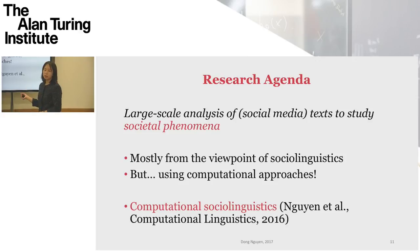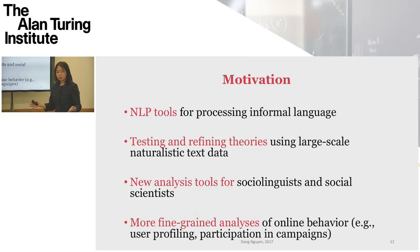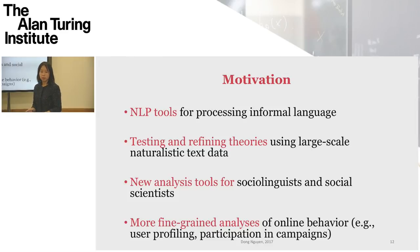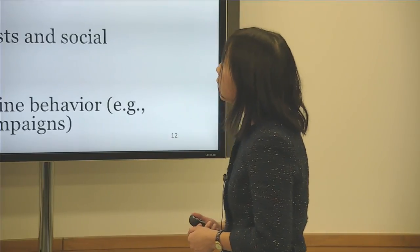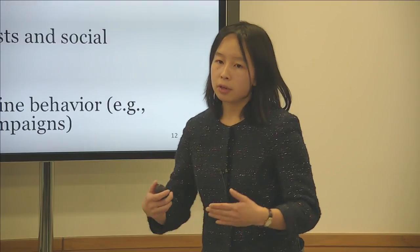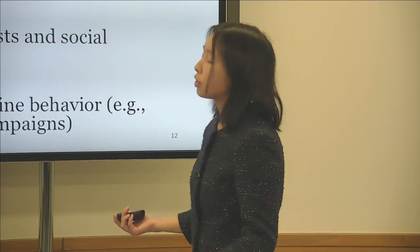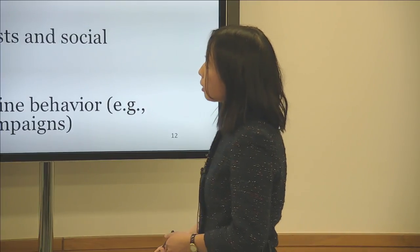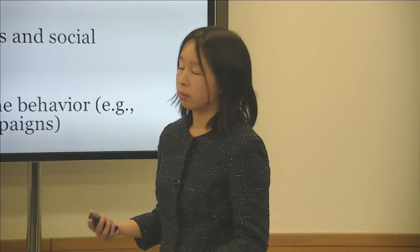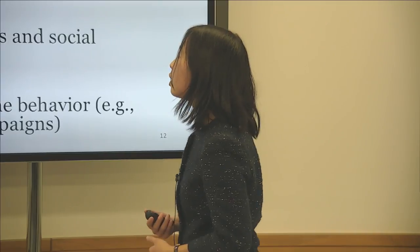So why is this research interesting? First of all, it can help improve the natural language processing tools that we have. For example, if you're analyzing language in social media, you would want to analyze all messages that are relevant and not exclude certain messages from certain social groups — from younger people, older people, or people writing a dialect. So you want your tools to be robust against language variation. It's also an opportunity to test and refine theories proposed in social linguistics using large-scale naturalistic text data, to develop new analysis tools, and it also has practical applications such as supporting user profiling or doing more fine-grained analyses of online behavior.